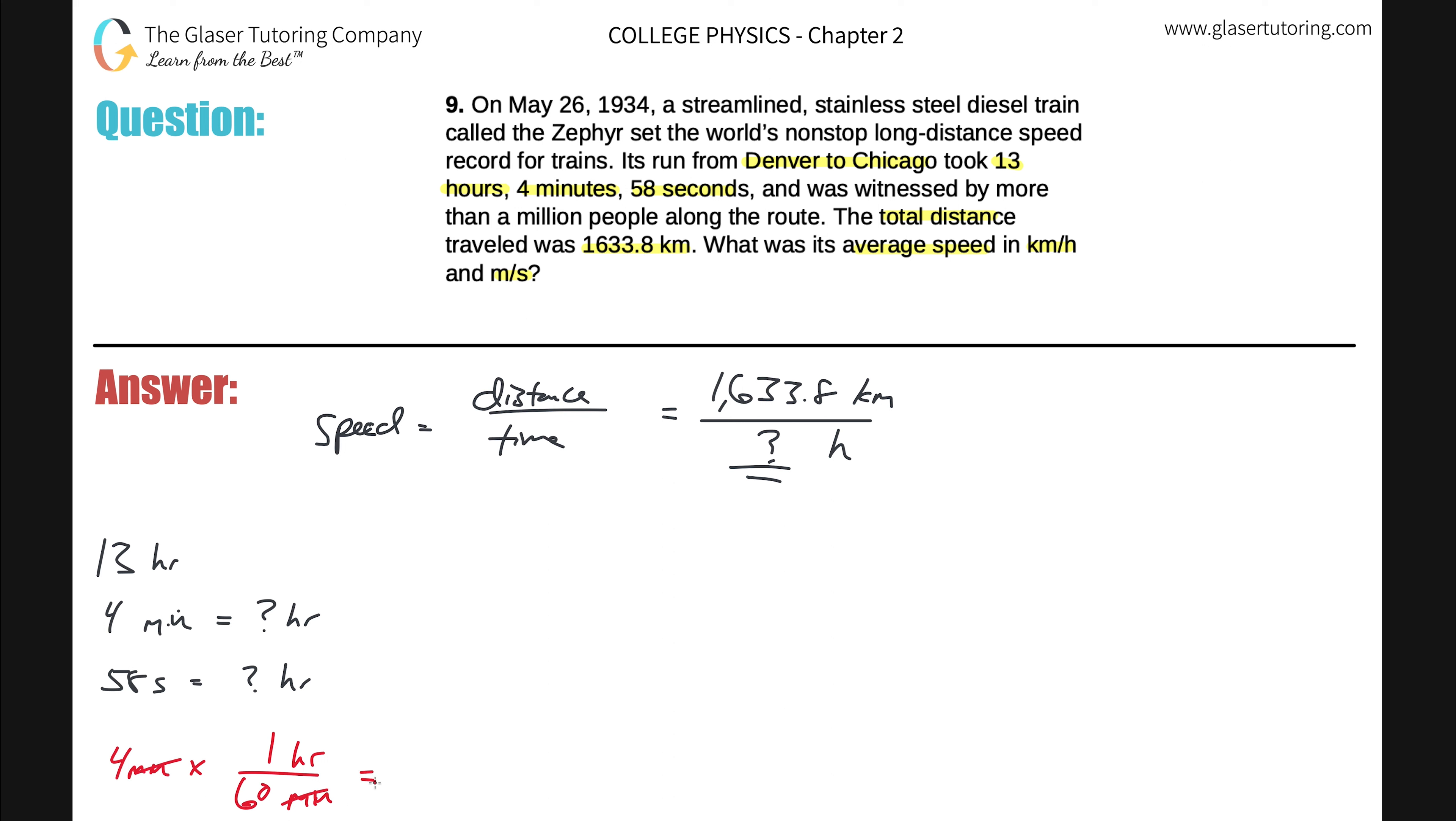So now all you have to do is do that division. Do 4 divided by 60. Comes out to a repeating decimal, 0.06 repeating. So that works. That's in hours.